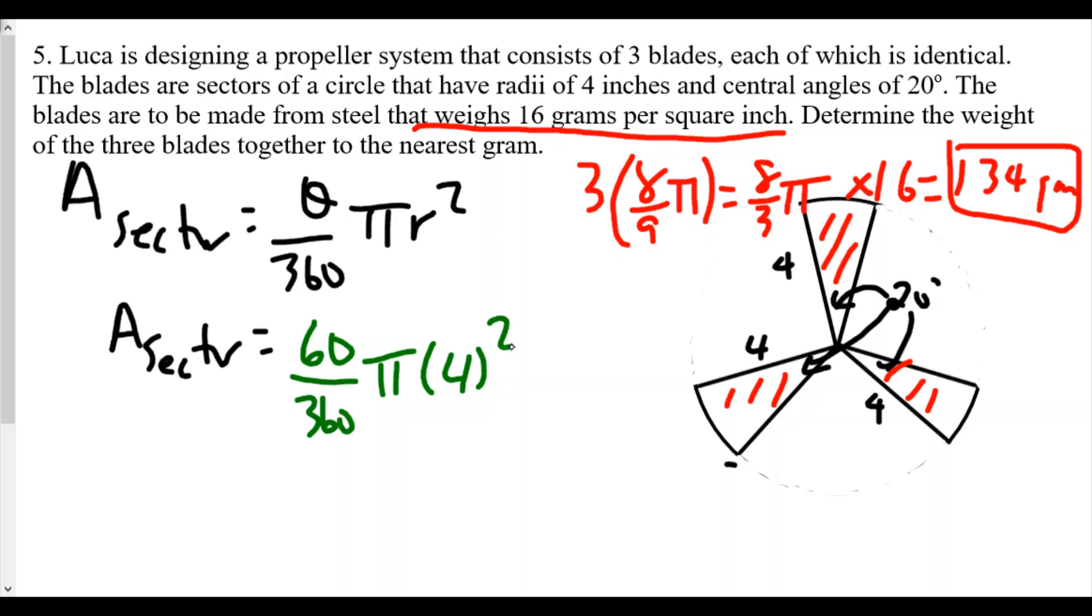Well, this simplifies to 8 over 3π. And again, multiply this by 16 will give us back the same exact answer of 134 grams. So we see in this case, we can do either: find each one separately or combine them into one giant sector because really you're kind of pushing them together.